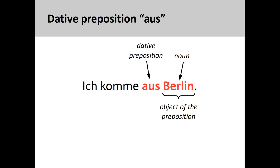But aus can also be used to describe where a person comes from, as in ich komme aus Berlin — I come from Berlin. As we have seen at the beginning of this presentation, aus can also be used to describe the process of emerging out of a building or a location, or taking something out of an object.